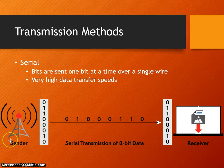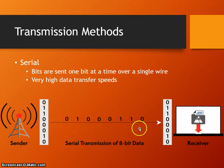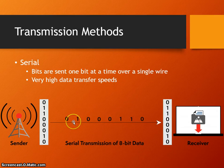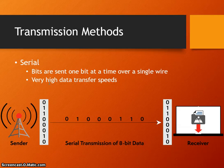Here we've got a sender — which could be a device, a peripheral, or a computer — and here is one byte that needs to be sent, and here is our receiver. This is our transmission, and we're sending 8 bits, one bit at a time over a single transmission cable. We can have transfer speeds going from 50 megabits per second up to 100 megabits per second, with potential for even higher. Serial transmission has become the most popular type of transmission.